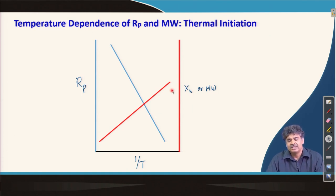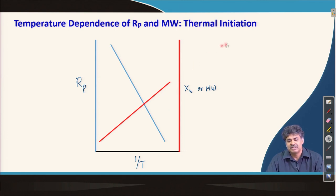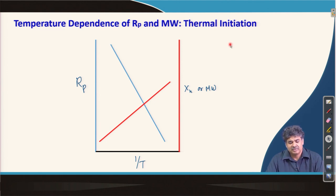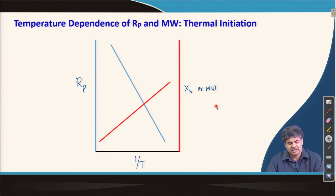If we want to increase the reaction rate and make more polymer in shorter time, we can increase the temperature. But the downside is that in thermally initiated polymerization, molecular weight comes down. This is because at higher temperature, more radicals are produced, leading to more bimolecular termination reactions, and as a result the molecular weight values decrease.